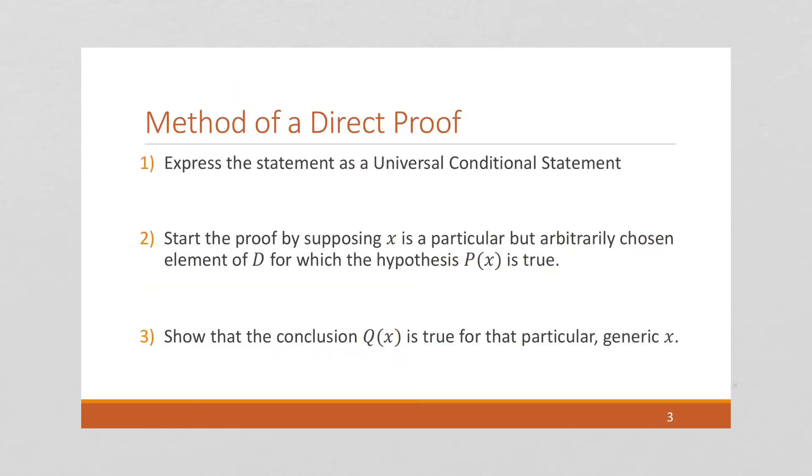So, the methods of a direct proof: we first express the statement as a universal conditional statement. For all x in our domain, if p of x is true, then q of x is true.